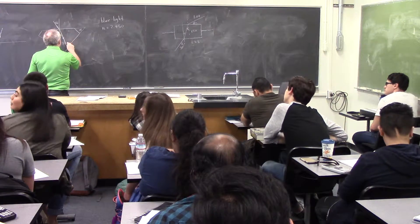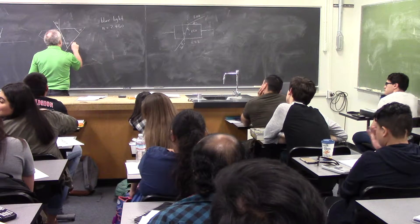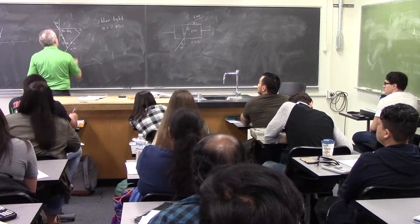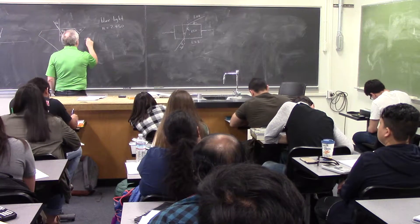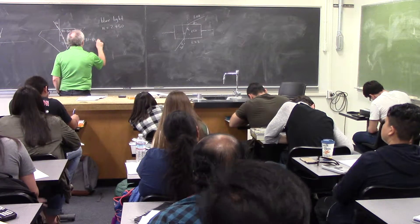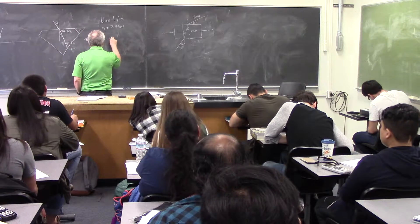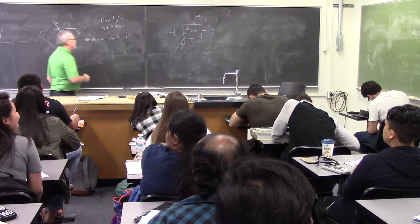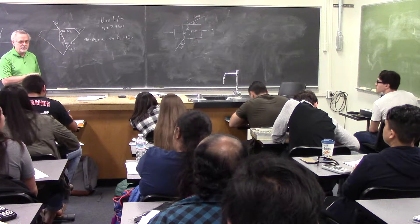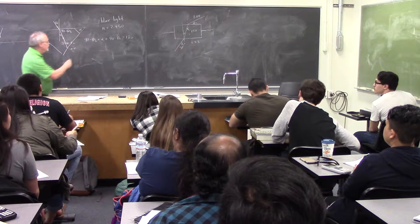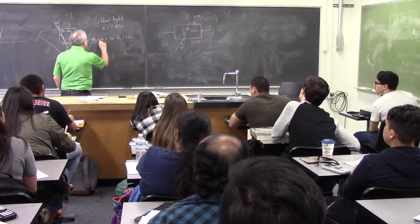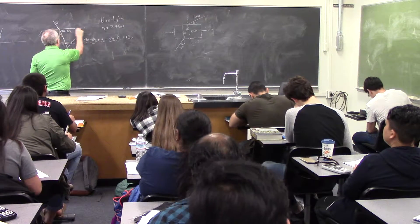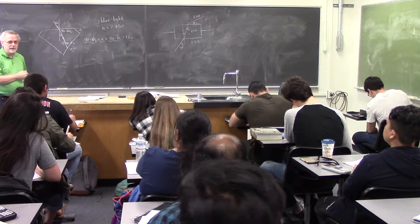The approach I used was: this angle is 90 minus theta_C, and this is 90 minus theta_B. And I know that (90 minus theta_B) plus alpha plus (90 minus theta_C) equals 180. Those are the three angles inside the triangle, and all triangles have to add up to 180 degrees.